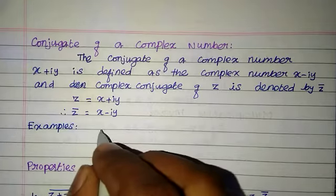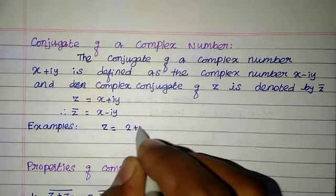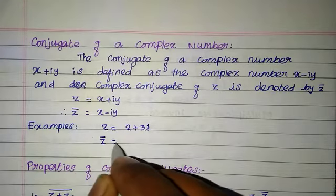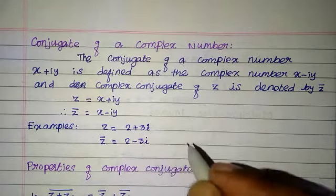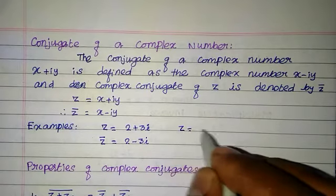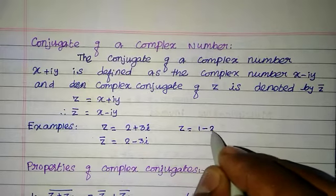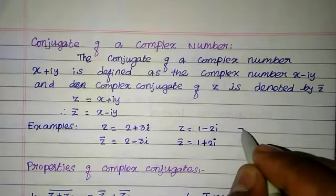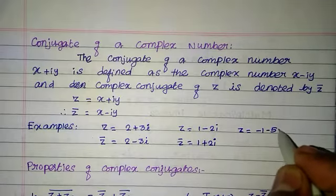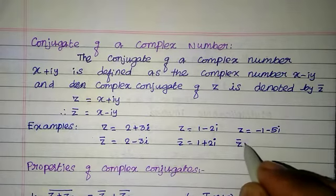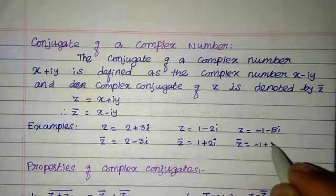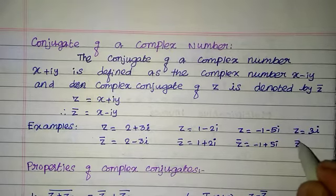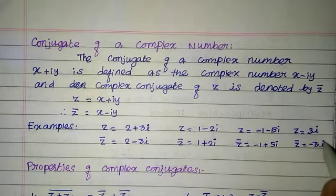Some examples. If z equals 2 plus 3i, then the conjugate z bar equals 2 minus 3i. If z equals 1 minus 2i, then z bar equals 1 plus 2i. If z equals minus 1 minus 5i, then z bar equals minus 1 plus 5i. If z equals 3i, then z bar equals minus 3i.